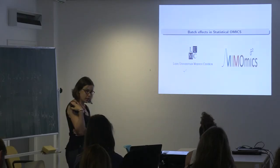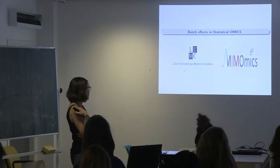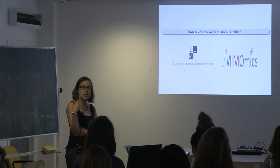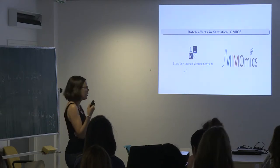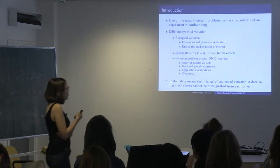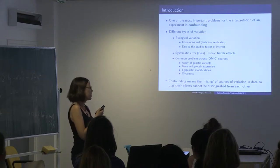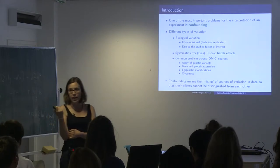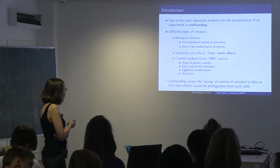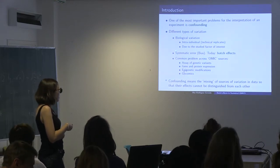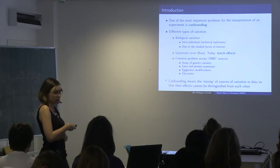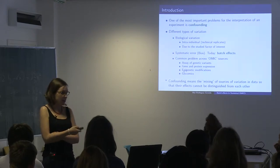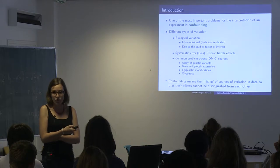Today I'm going to talk about batch effects as a continuation of the lecture on experimental design and batch effects. We will see how this connects to the previous discussion about how to design our experiments. One of the main problems when analyzing data from a given experiment is confounding, due to the presence of systematic errors or bias. Can you give me an example from the design where we can have a problem of bias or systematic error?